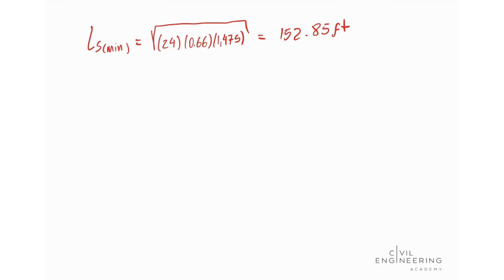Now let's calculate for equation 3-28. We're going to have that our minimum length of spiral is going to be equal to 3.15 times 65 cubed divided by 1475 feet times the C, which is 4 feet per second cubed. And this will give us 146.62 feet.